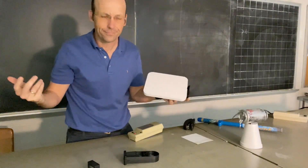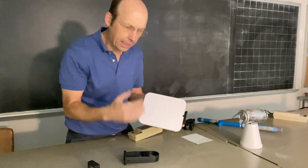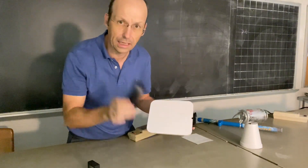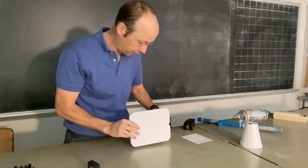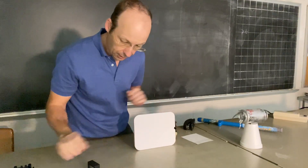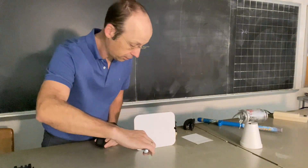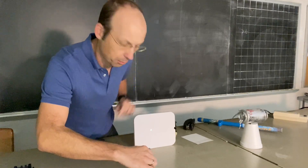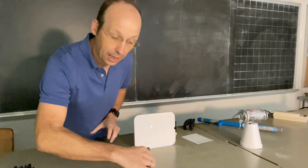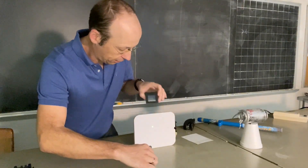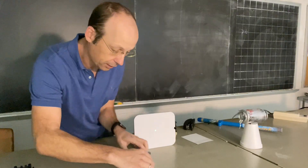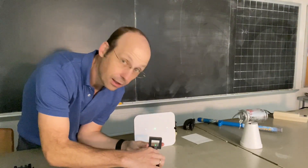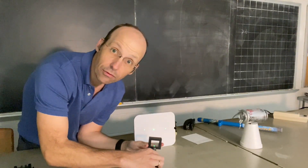It's a classic example of how we understand light. Here is a laser pointer — you can see the little green dot right there. It's not super bright, and if I put this diffraction grating in front of it, then I get three dots.